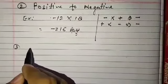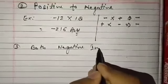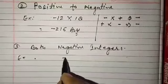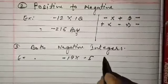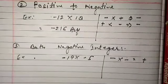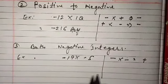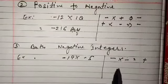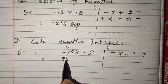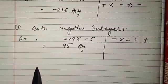Case three: both negative integers — for example, minus 19 into minus 5. Negative multiplied by negative gives a positive answer, as we also saw on the number line where both negative numbers were counted on the right-hand side, which is always positive. So whether the first and second numbers are both negative, the answer will always be positive. 19 × 5 = 95, and the answer is positive 95 — no negative symbol.